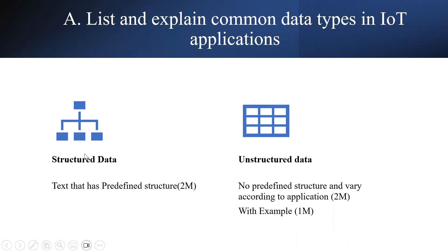Under structured data, make sure you write the keyword 'text that has predefined structure,' and give examples of applications that use structured data. For unstructured data, use the phrase 'no predefined structure, but vary according to the application.' These keywords earn two marks each. Writing the specific applications for structured and unstructured data earns one more mark. Total weightage: five marks.